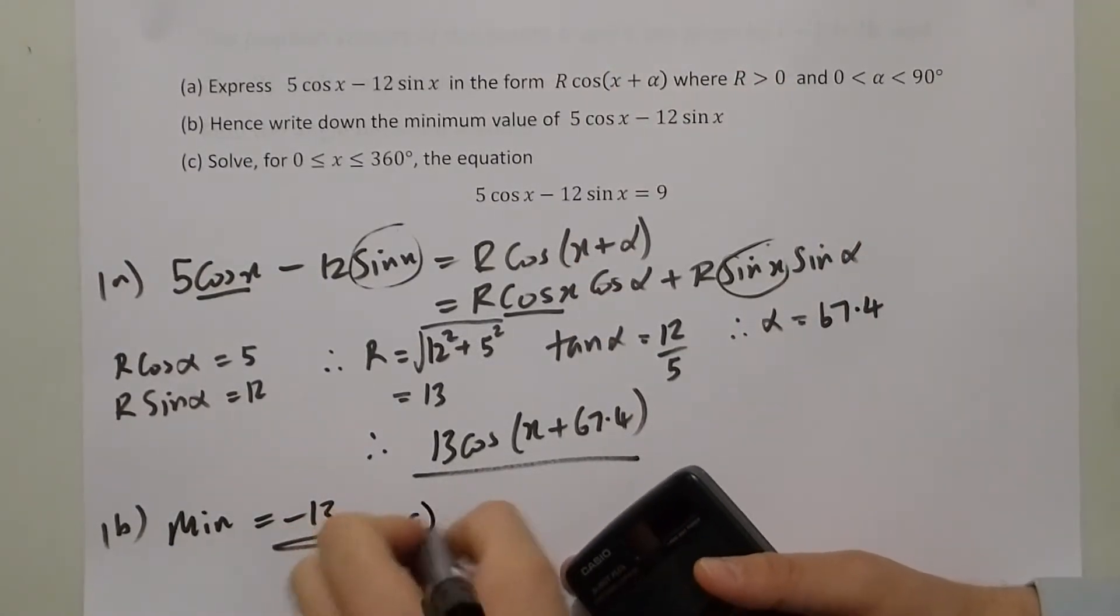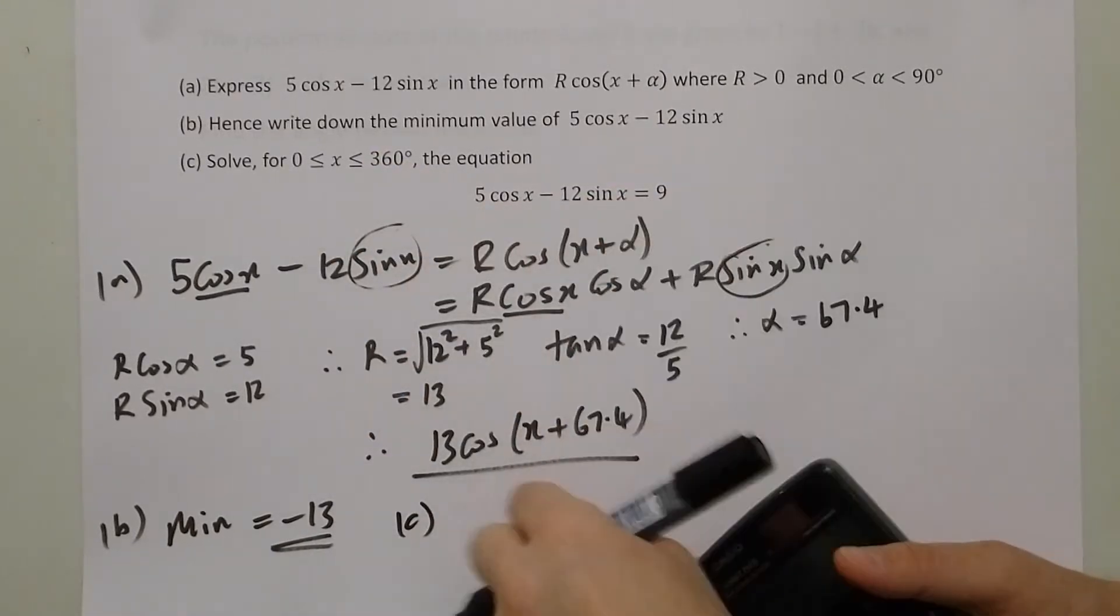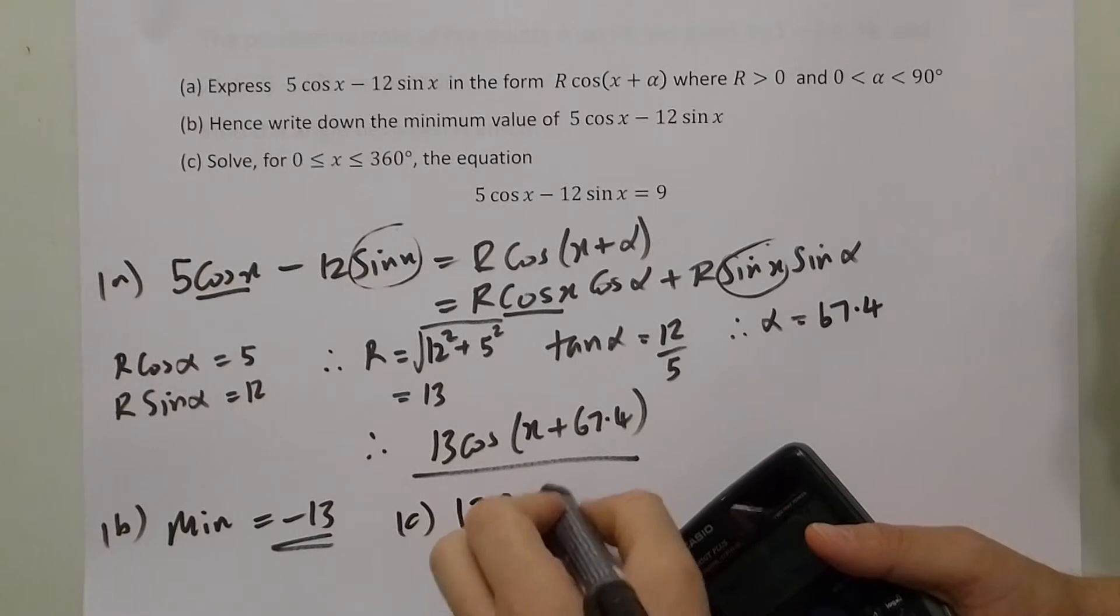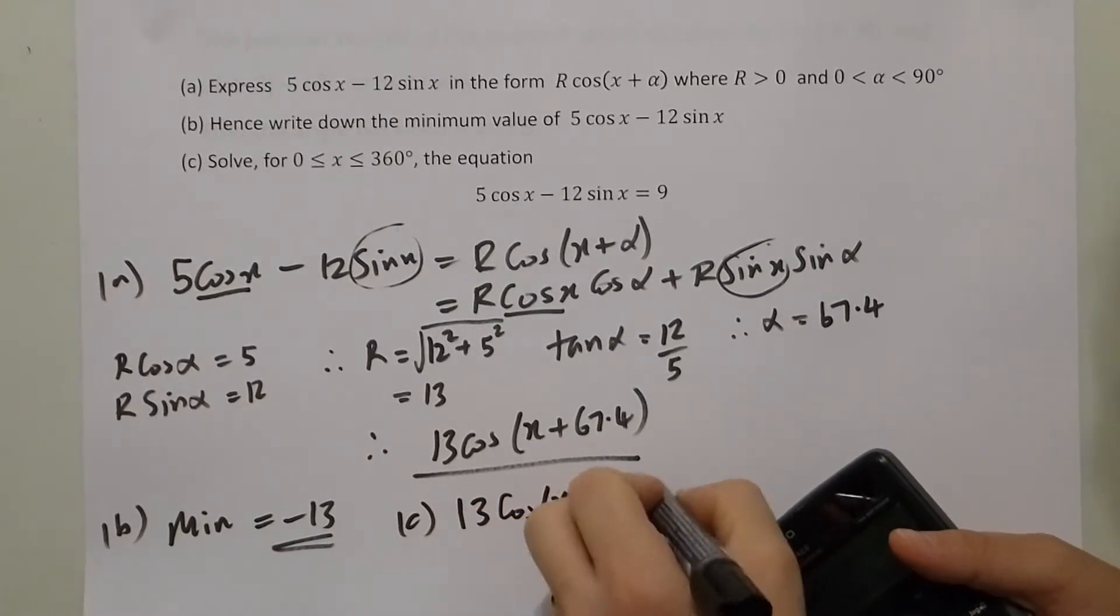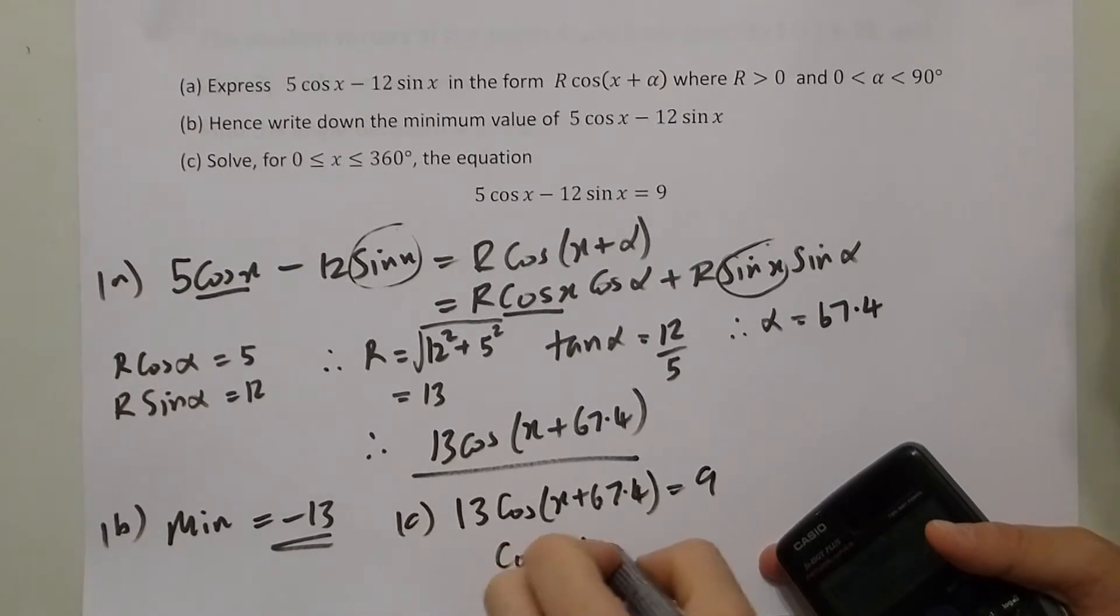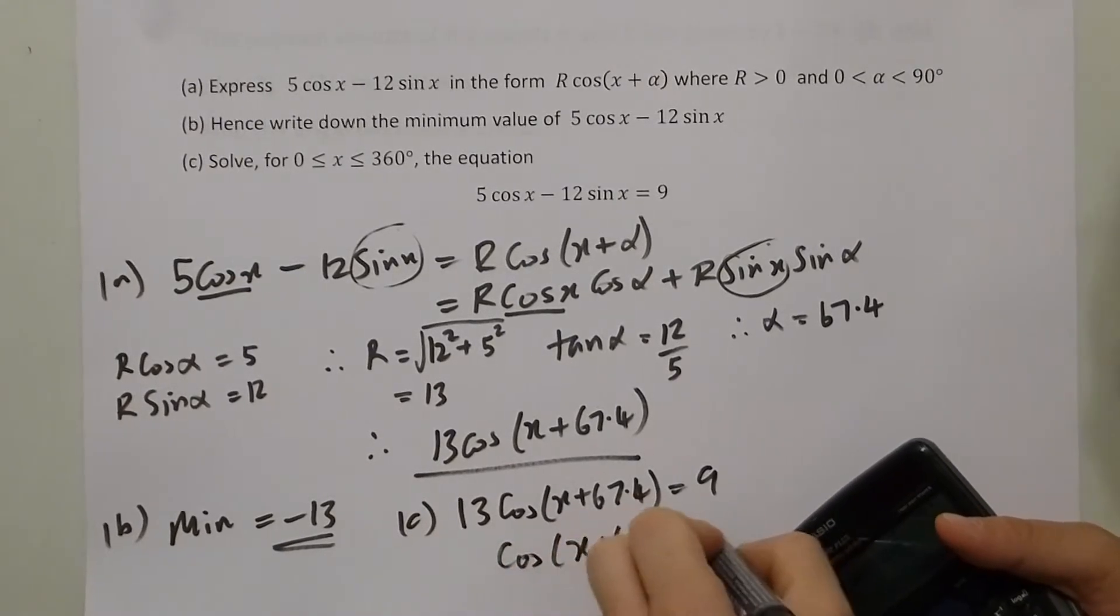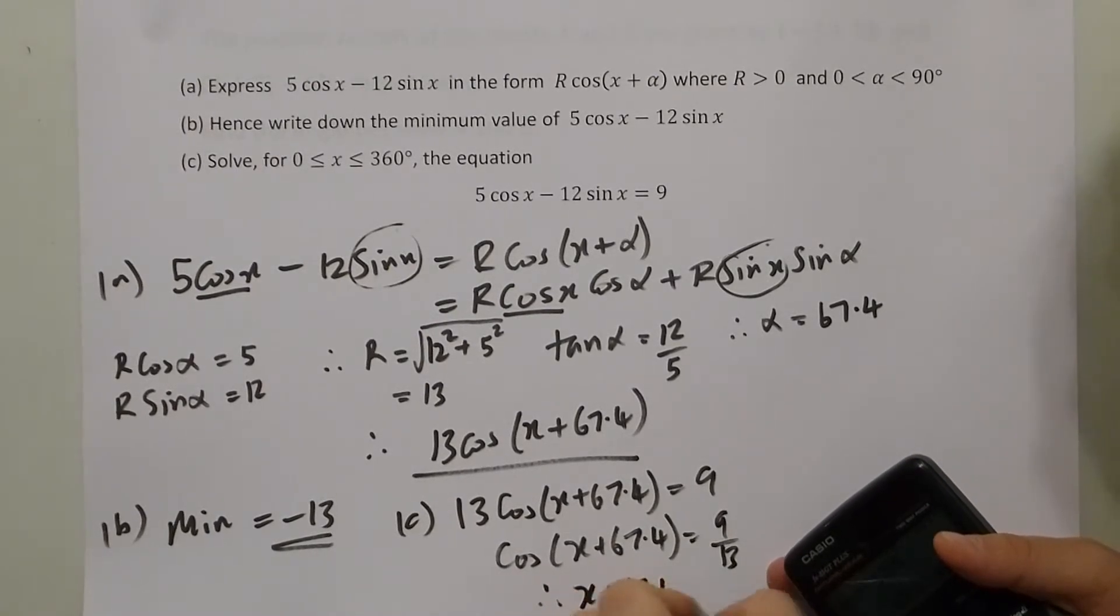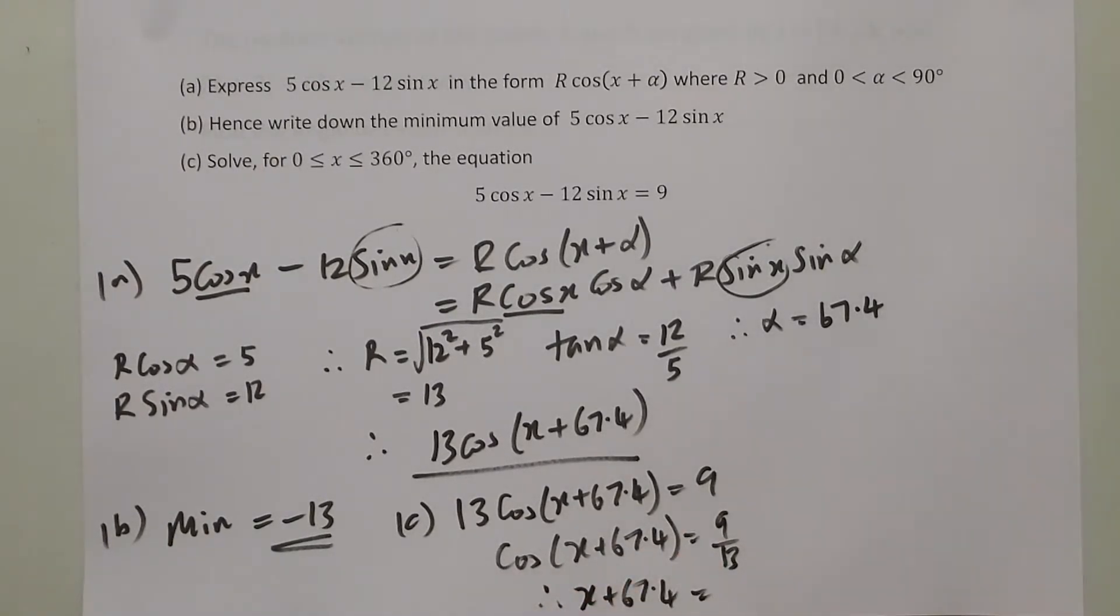In part C, you have to solve the equation equal to 9. Well, I can replace that with the cos form. So 13 cos(x + 67.4) equals 9. So cos(x + 67.4) must equal 9 over 13. Therefore, x + 67.4 must equal the inverse cos of that, which is 46.2.